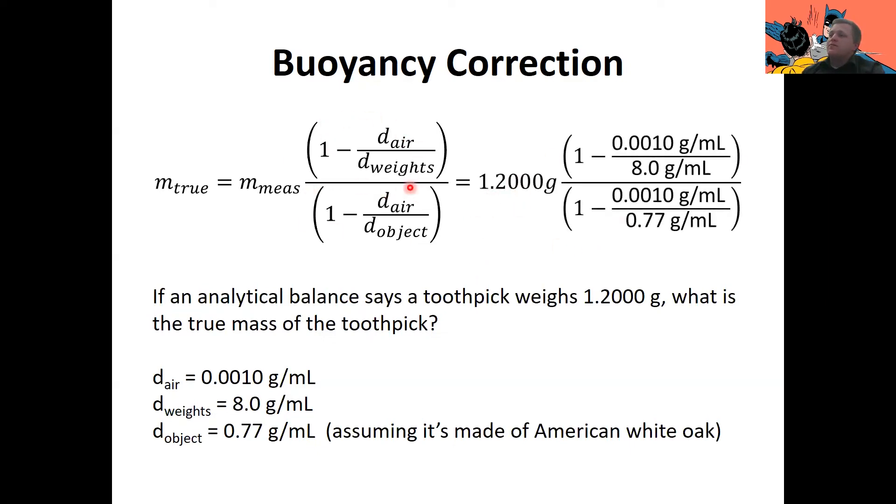So all we're going to do here is plug numbers in for these values. So our measured mass, of course, is this 1.2000 grams that we read off of our analytical balance. The density of the air is 0.0010 grams per mil. That's going to go up here and down here. The density of our weights, like I said, is 8.0 grams per mil. And then the density of our object, assuming our toothpick is American white oak, is 0.77 grams per mil. We just plug all that into our calculator and we get out 1.2014 grams. If you didn't get this number, check that you put the proper parentheses into your equation. As we go forward throughout this class, we're going to get more and more complicated equations. And parentheses soon become very important as do order of operations. So make sure you got that all worked out. And soon when you start learning how to do Excel, you're going to have to type in really long equations. Make sure you can get those right as well.